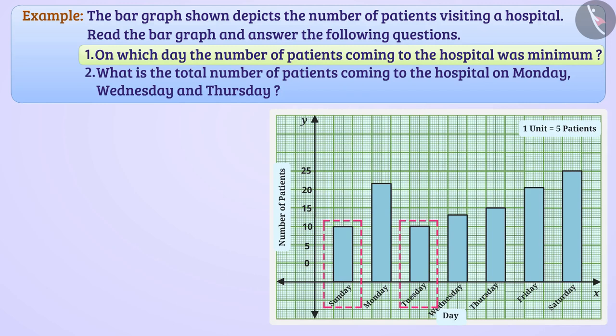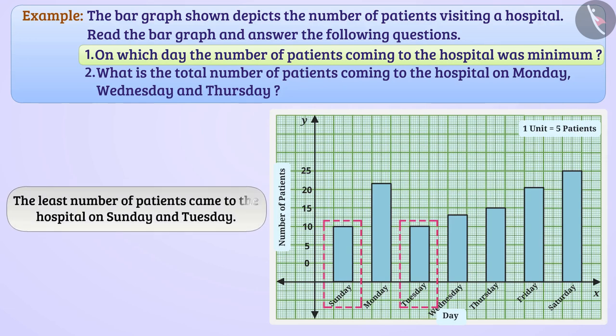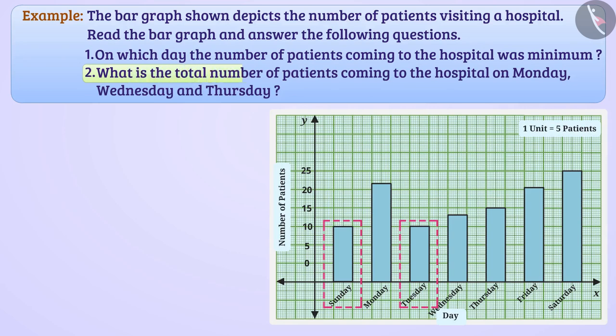So, we can say that the least number of patients come to the hospital on Sunday and Tuesday. What is the total number of patients coming to the hospital on Monday, Wednesday and Thursday?